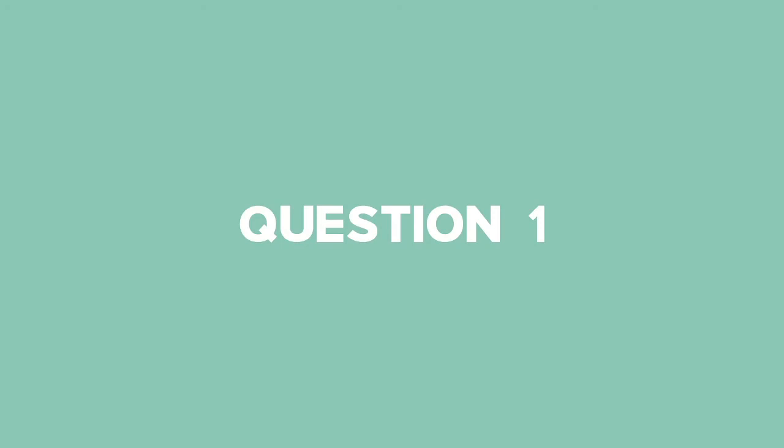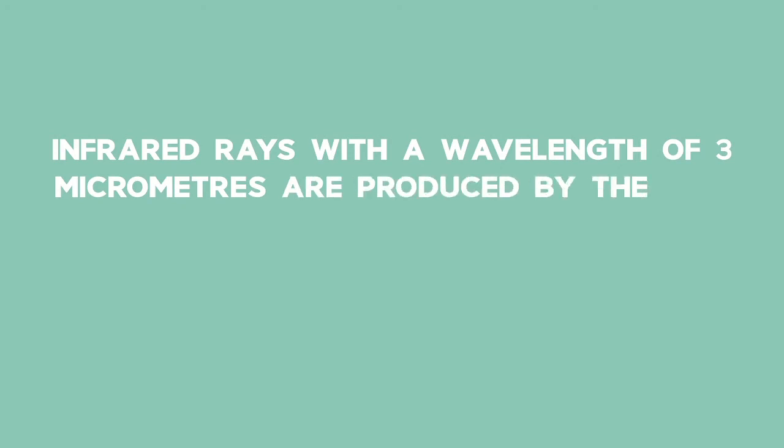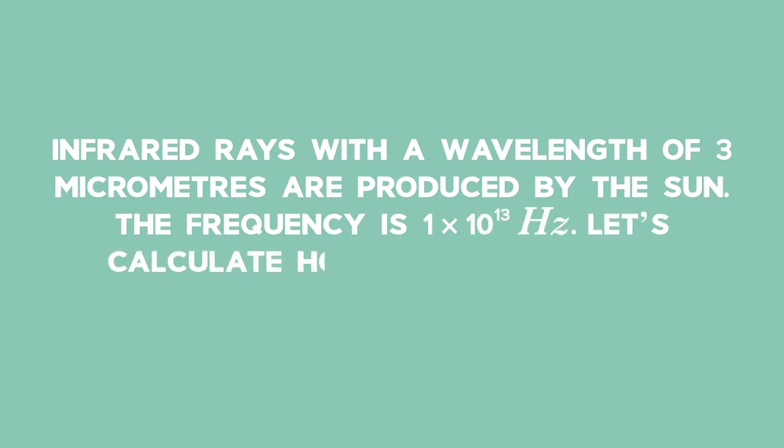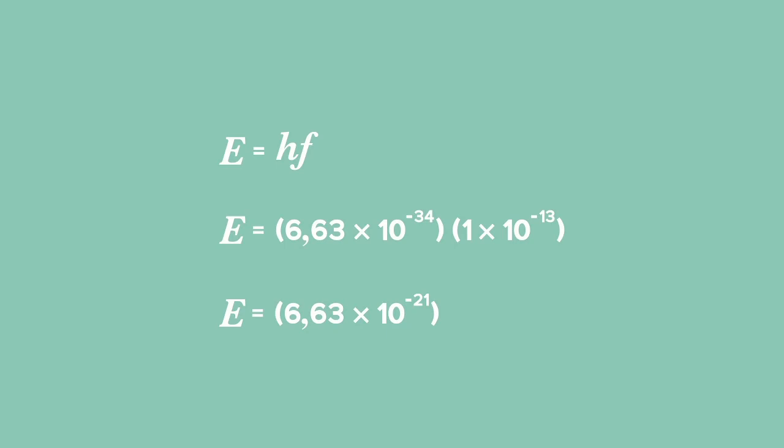Question 1: Let's do a question where we look at EM radiation waves. Infrared rays with a wavelength of 3 micrometers are produced by the sun. The frequency is 1 times 10 to the power of 13 hertz. Let's calculate how much energy the infrared photons have. If we substitute the frequency and Planck's constant, H, into the equation, we get 6.63 times 10 to the power of negative 21.